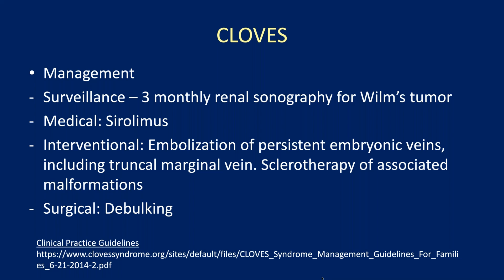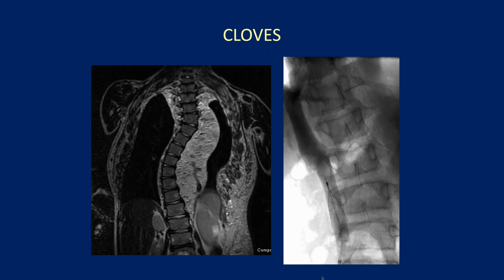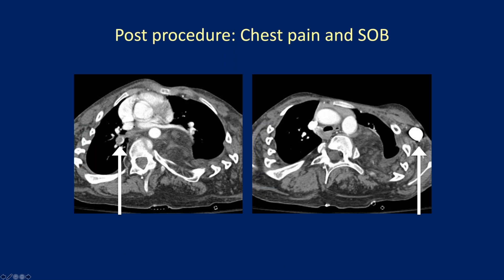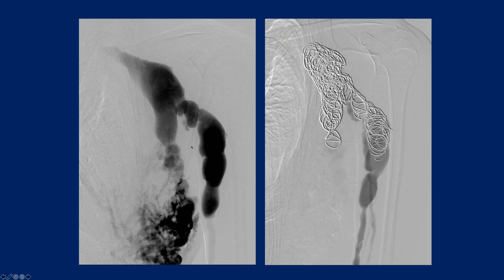For CLOVES management, we advocate three-monthly renal sonography because these patients are at increased risk of Wilms tumor. Many patients are on sirolimus for leakage, and a new drug called BYL719 has shown promise in PIK3CA-related overgrowth syndromes. Interventional treatment is the embolization of persistent embryonic veins — in CLOVES, in addition to lower extremity veins, patients often have truncal marginal veins. One CLOVES patient undergoing scoliosis surgery decompensated post-procedure with a large embolus in the right pulmonary artery, which had migrated from the truncal marginal vein in the left chest wall. Upper extremity veins including subclavian and axillary veins can also be embolized if required.